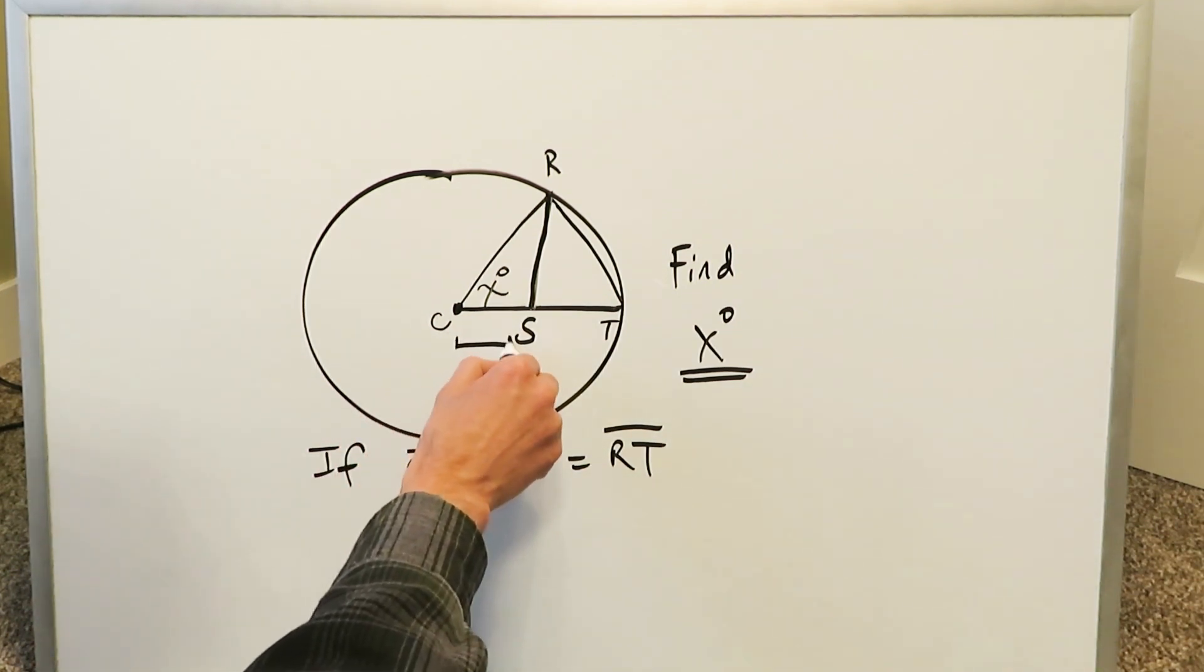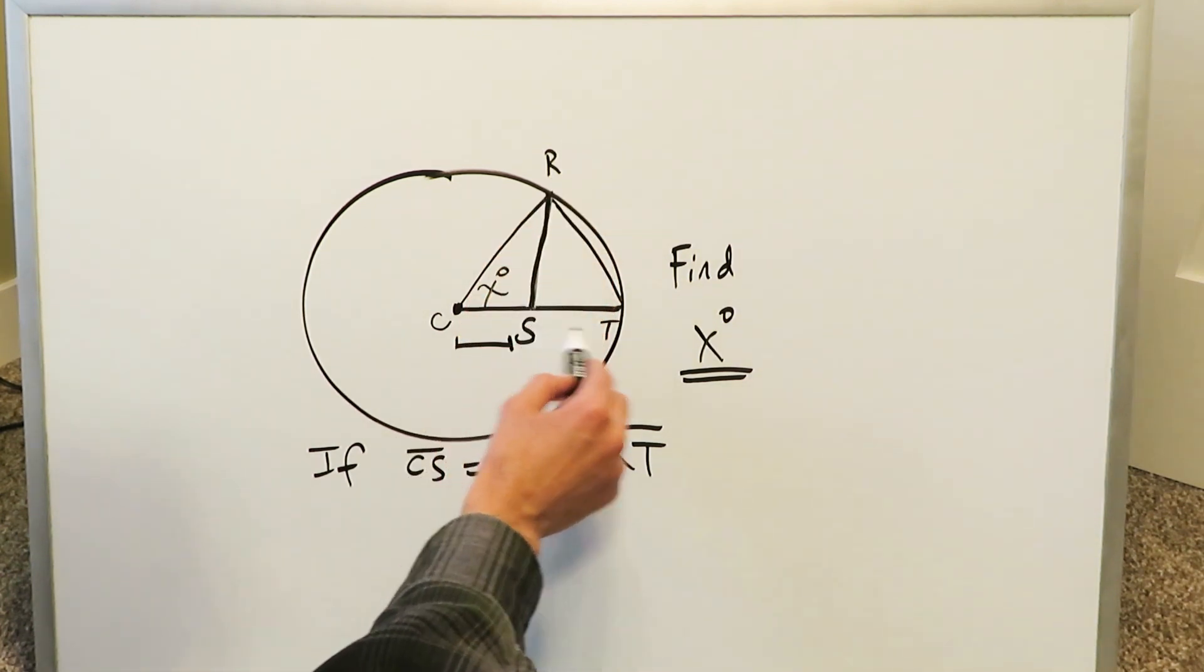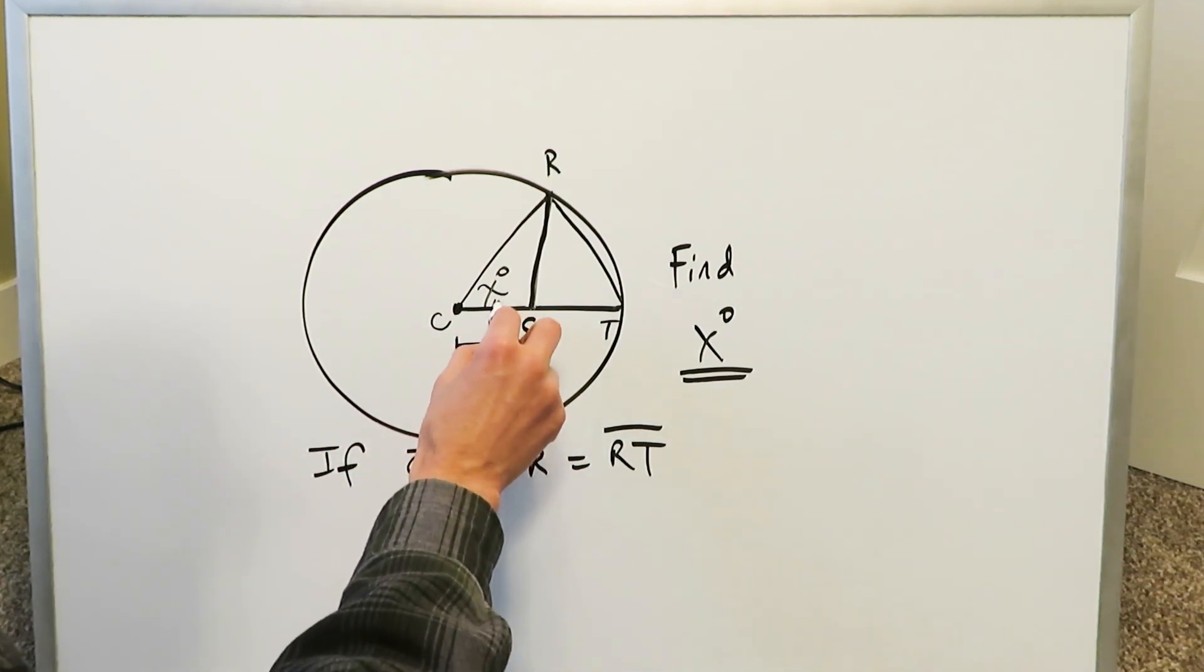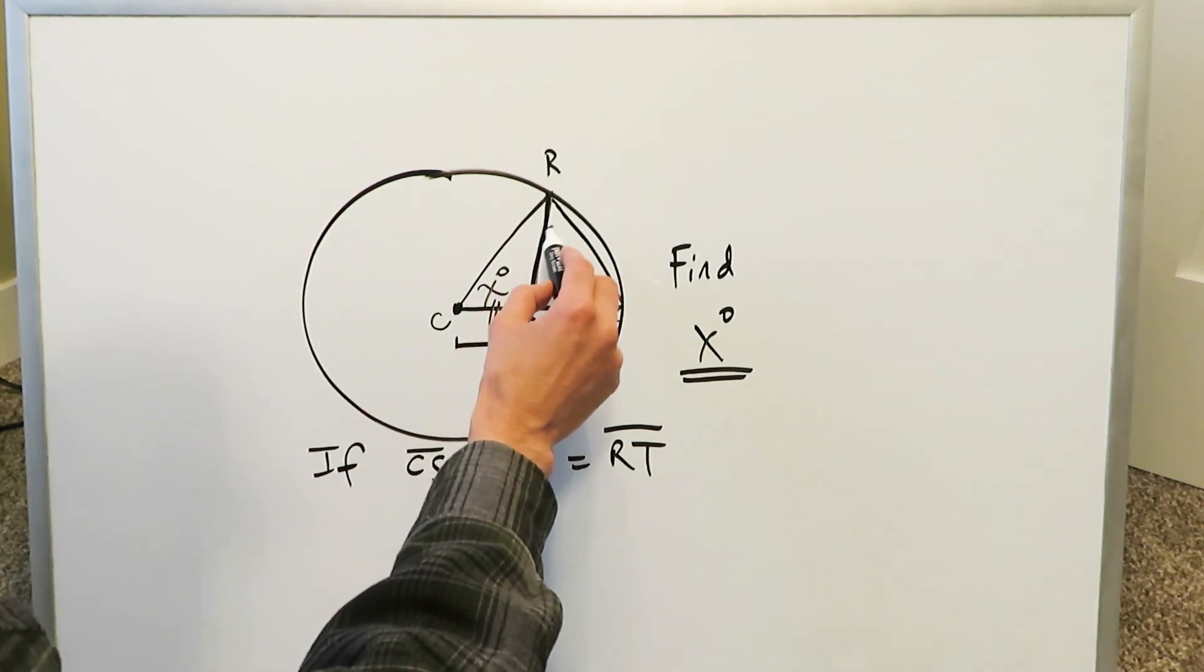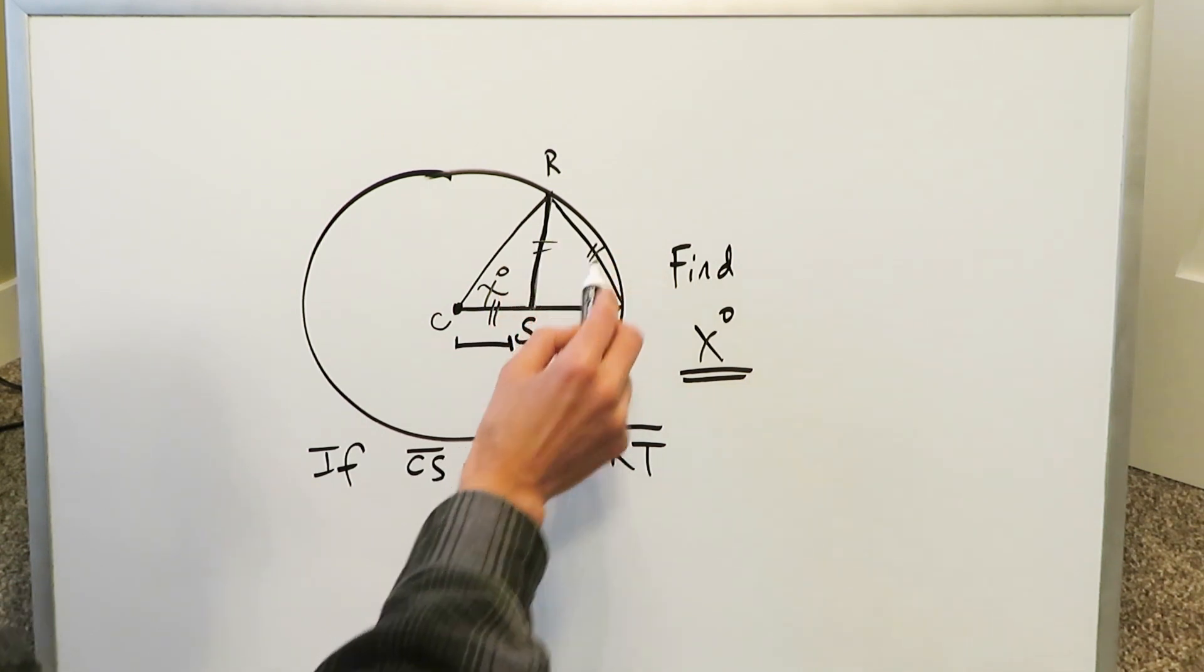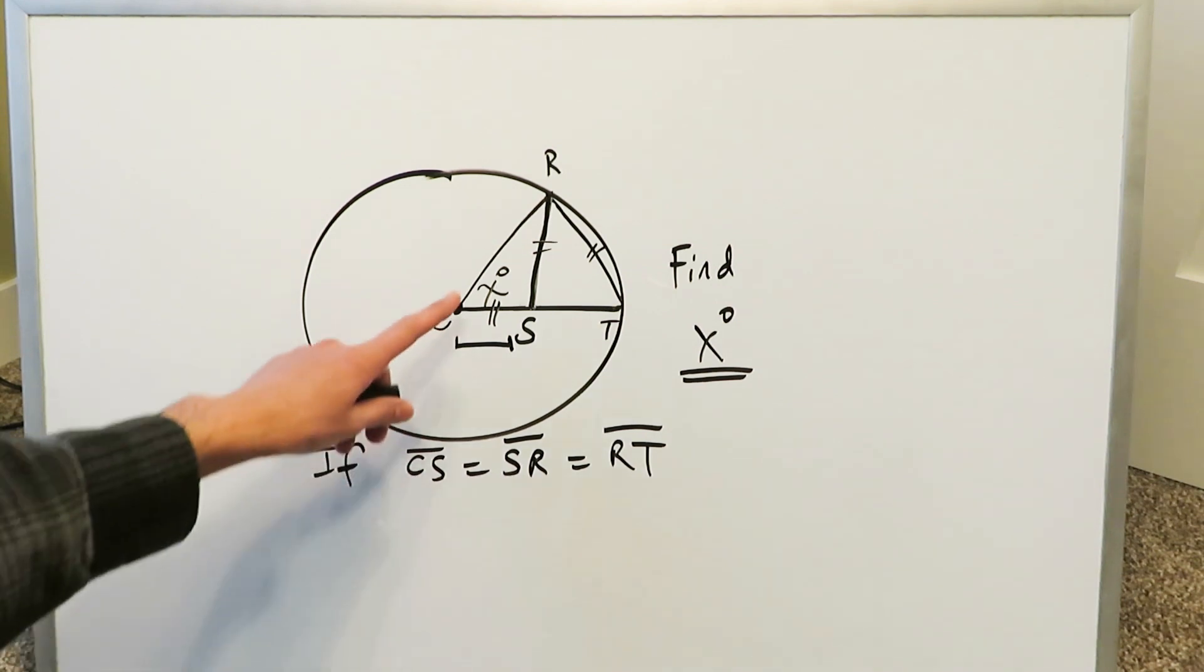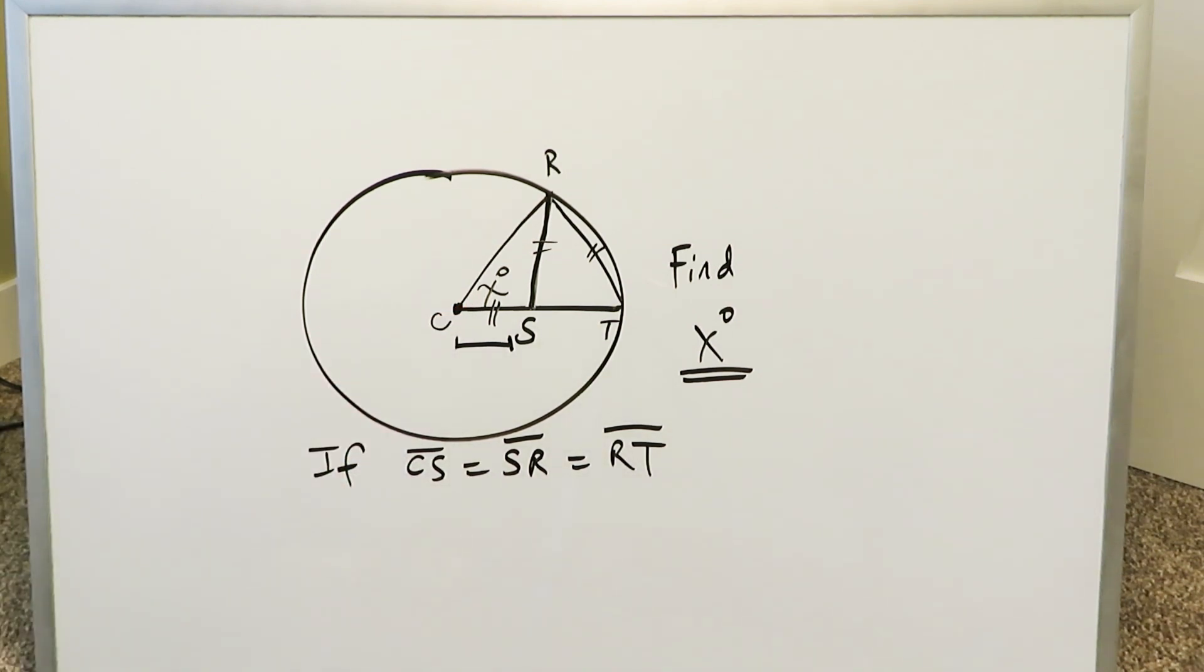There are a bunch of segments that you need to be aware of. This CS segment is equal to RS, which is equal to RT. Now nothing here is drawn to scale, but you have to understand that segment CS is equal to this segment, which is equal to that segment. You can see the sector right over here. We have to find this angle X.